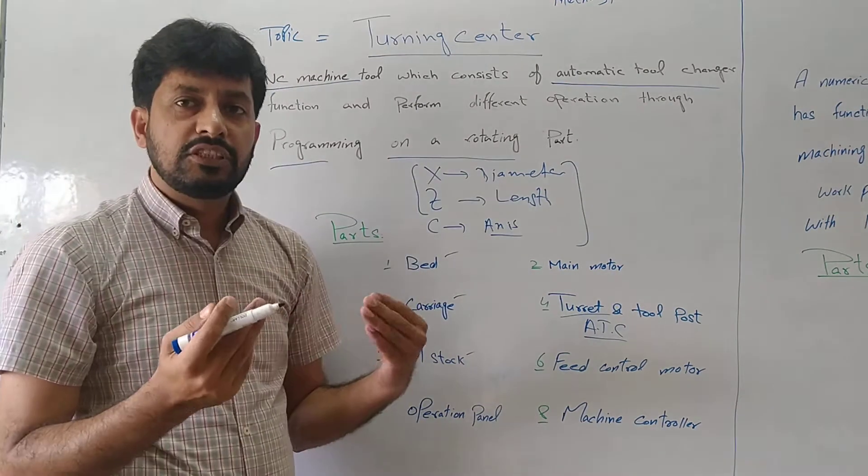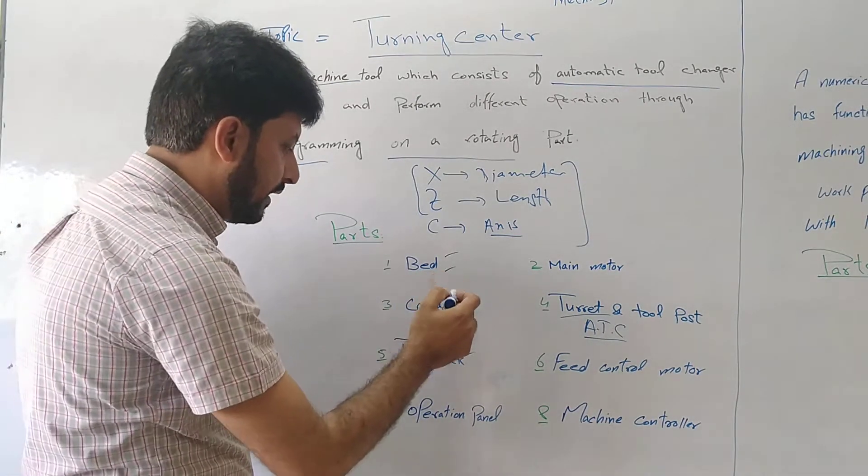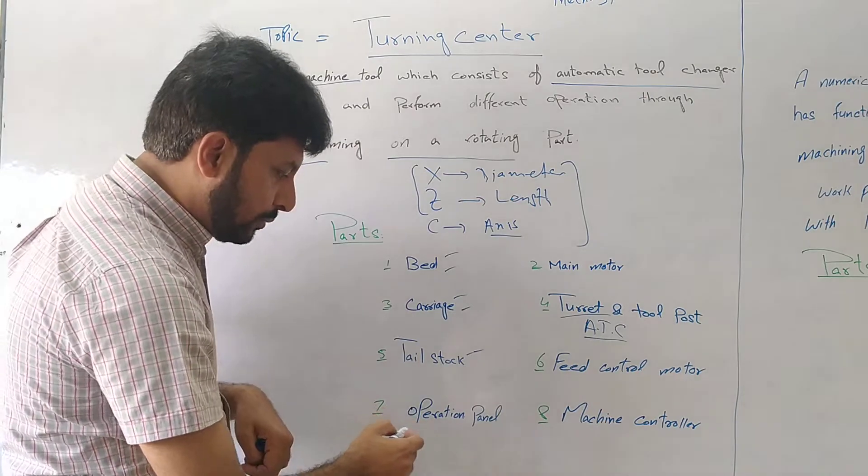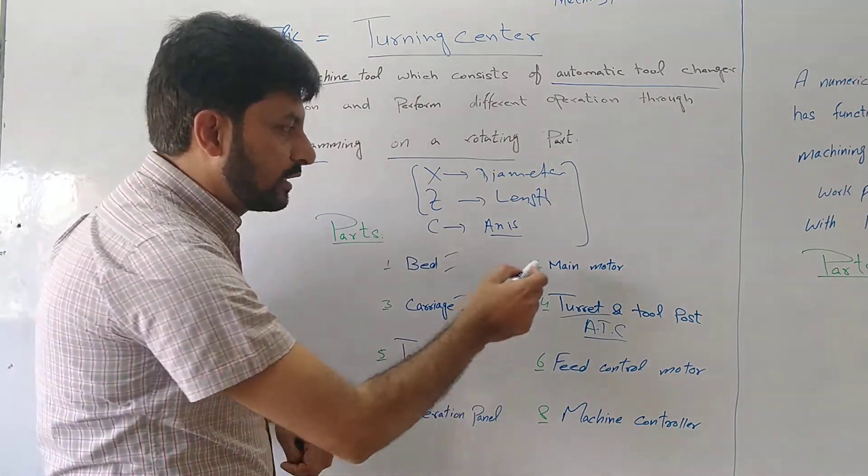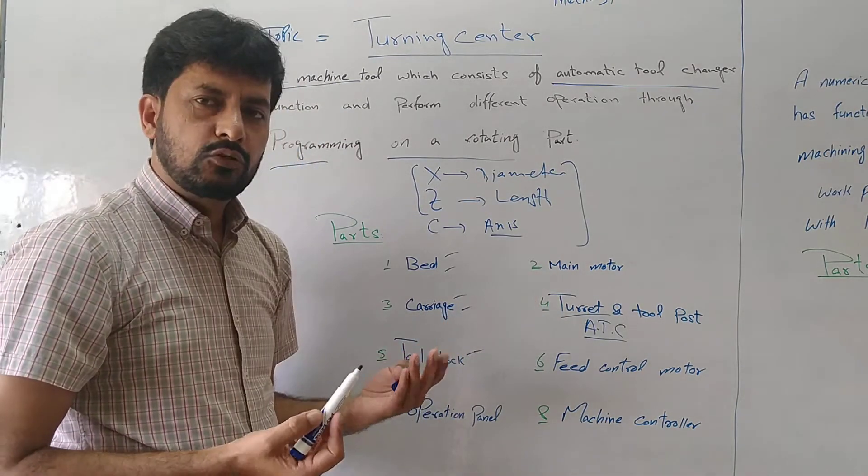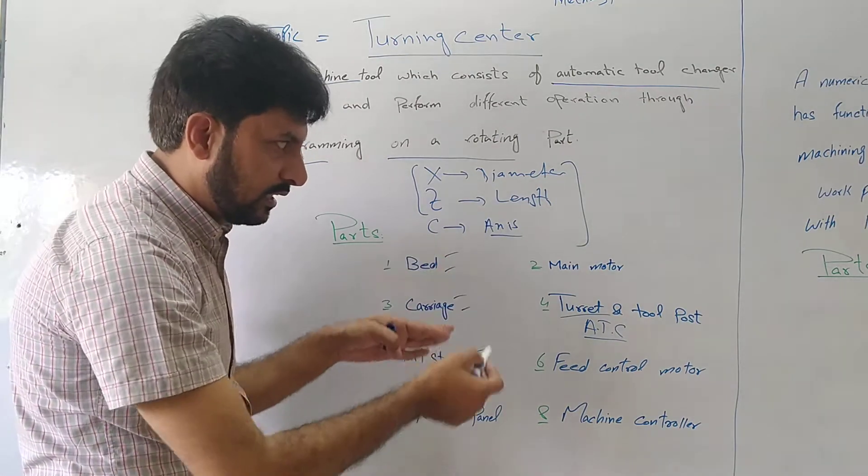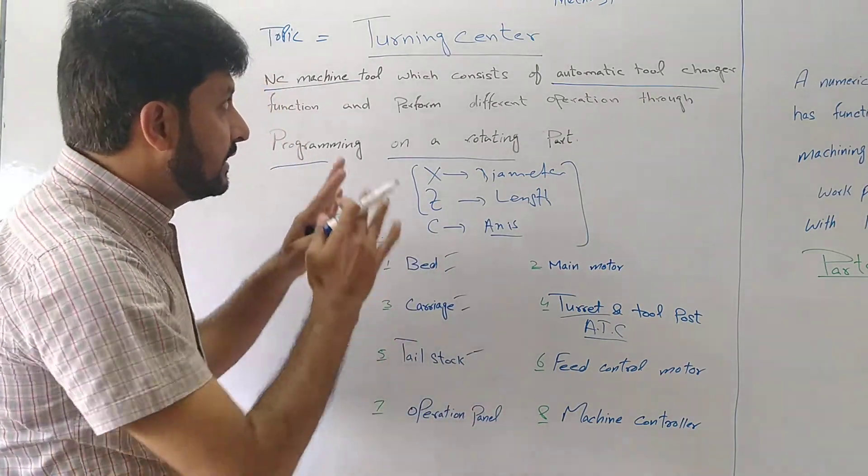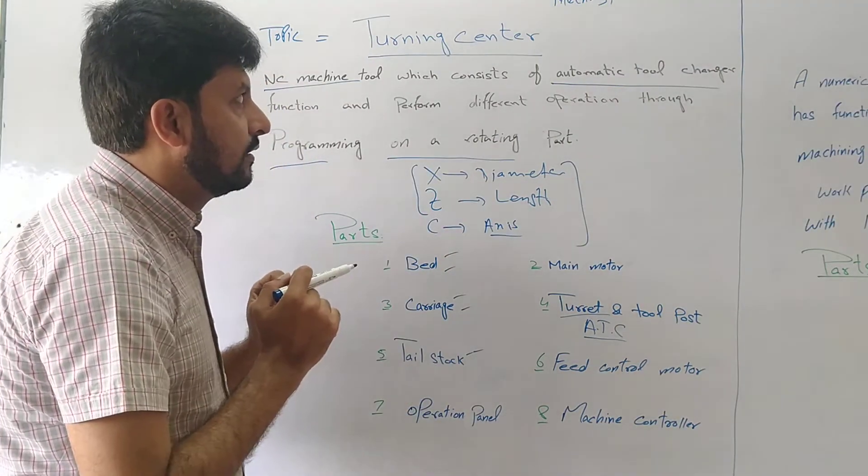If we talk about this, then we can use parts. Bed, carriage, tailstock, operation panel, there is no main motor and gearbox. This is a box in which we can do all of this. This is a turning center.